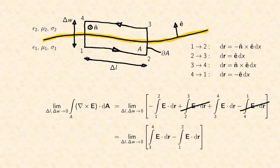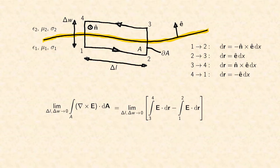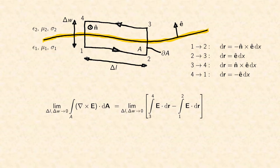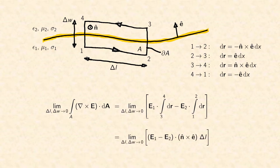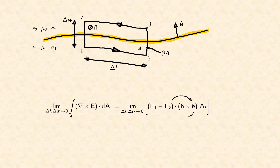The situation for the integrals from corner 1 to 2 and from 3 to 4 is different. Even when the width delta W becomes infinitely small, each of the integrals is still carried out on another side of the interface and therefore the electric field in both integrals is generally different. However, we can at least be sure that both fields become essentially constant when the length delta L of the integration path is made infinitely small. Therefore we write the arguments in front of the respective integrals which both result in the path length delta L. Finally, we cycle the factors of the scalar triple product to the left direction.